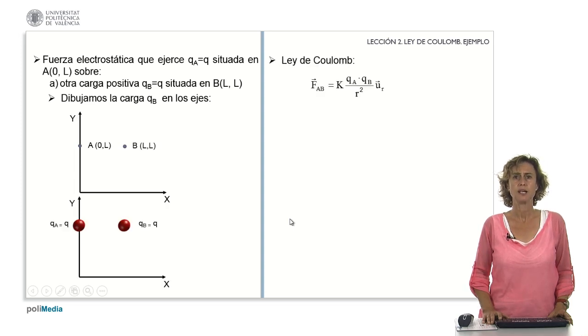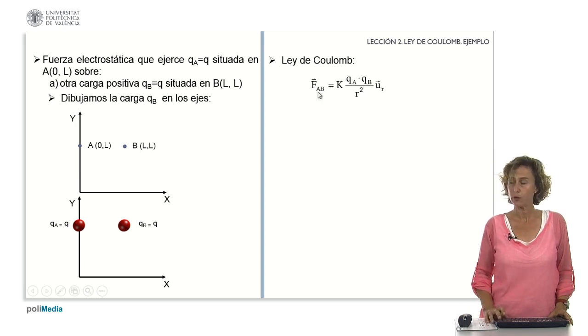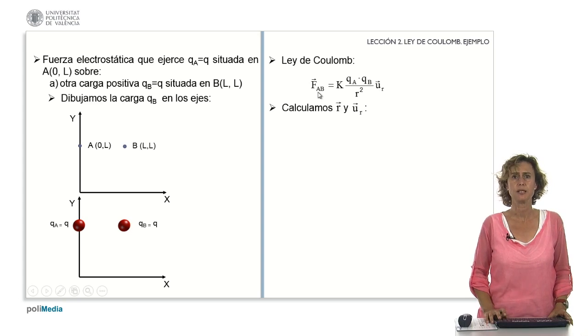We want to calculate the force that Q sub A exerts on Q sub B. We express Coulomb's law in generic form. And now what we have to do is we have to determine R and U sub R.